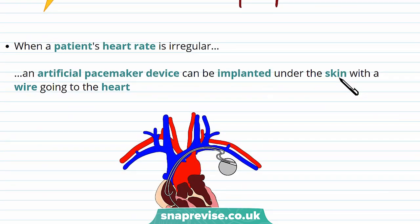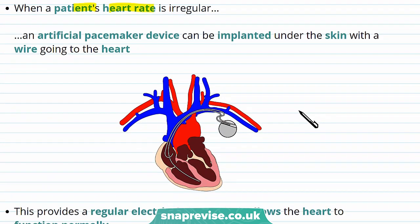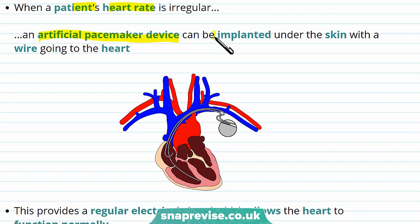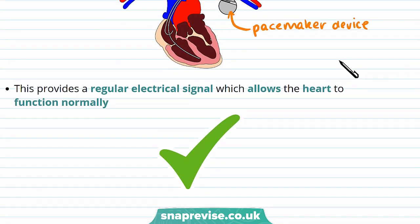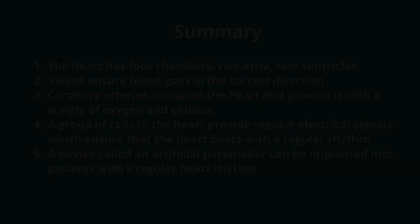When a patient's heart rate is irregular, an artificial pacemaker device can be implanted under the skin. It has a wire going towards the heart and provides a regular electrical signal, which allows the heart to function normally.